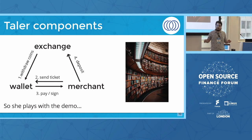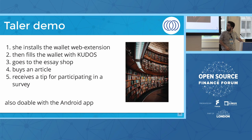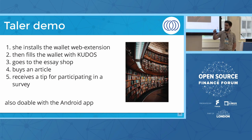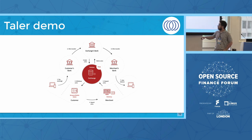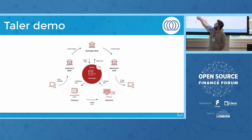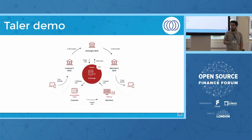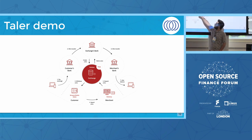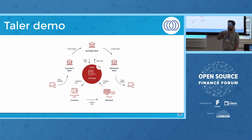After she saw this, she said show me the money — where is the demo? So first she installed a web extension, which I'm going to show you right now. She withdrew money from a bank that we have in the demo. We have a demo bank to show it better. When you fill a wallet, you need to talk to the exchange, and the exchange will say: you want $10 in Thaler coins? You need to send me $10 in my bank account.